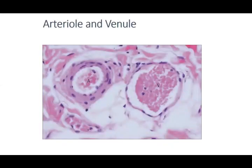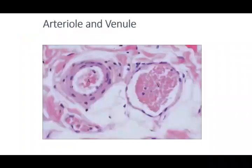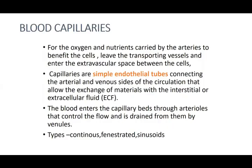In the slide, the arteriole (A) shows the smooth muscle wall, while the venule shows less prominent muscle with blood in the lumen and just an adventitia outside. Venules have a weaker wall, which is why veins are called reservoir or capacitance vessels. Blood capillaries are simple endothelial tubes connecting the arterial and venous sides of the circulation, where exchange of materials occurs.